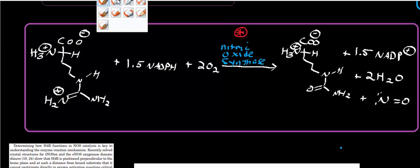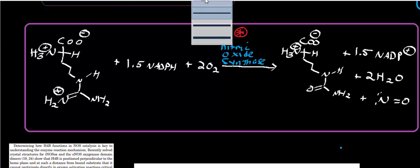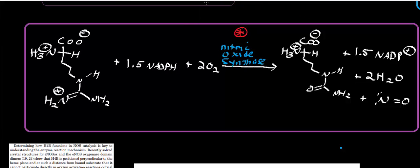It has a similar type of electron transfer capacity. It has heme B in it. When we look at the mechanism of this enzyme, it's going to resemble parts of the P450 mechanism. So basically what we'll do first is really just go over the very general reaction.